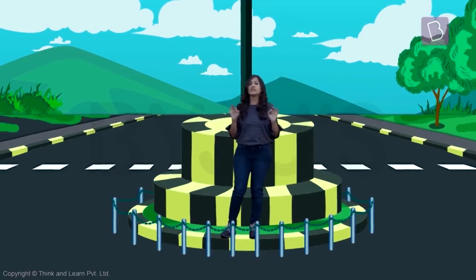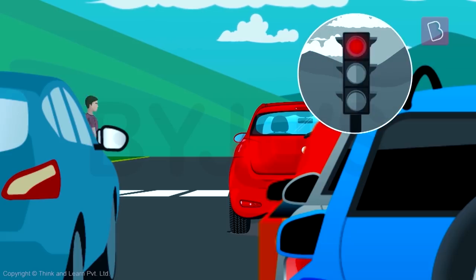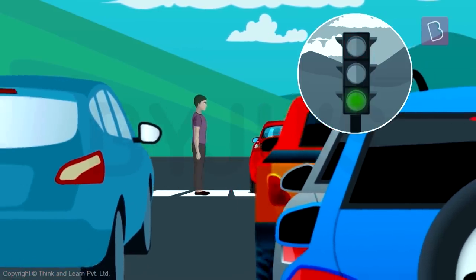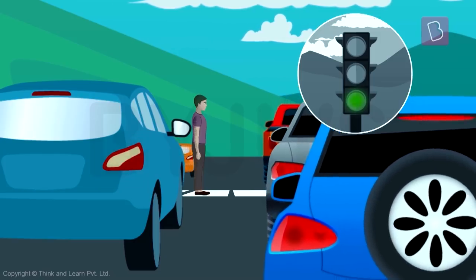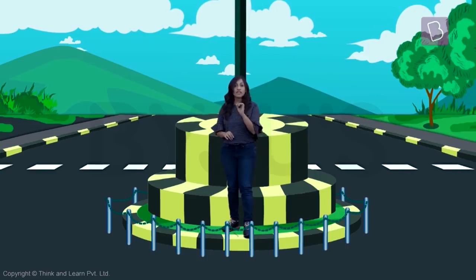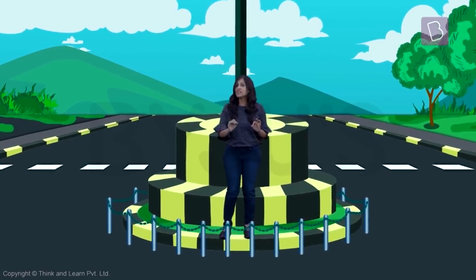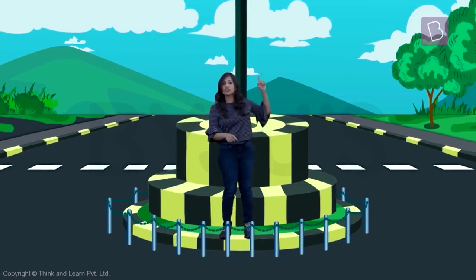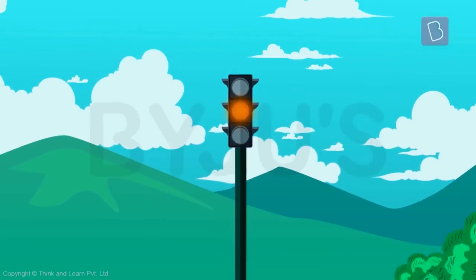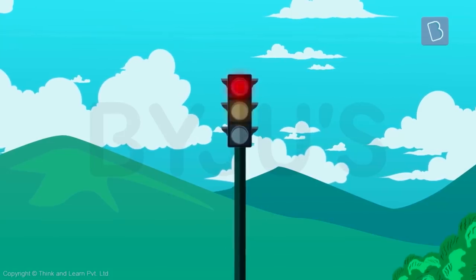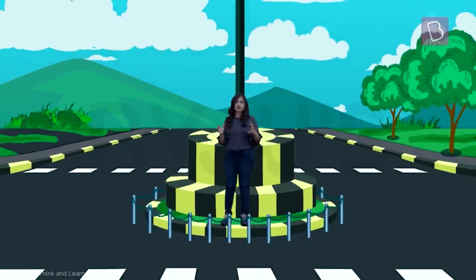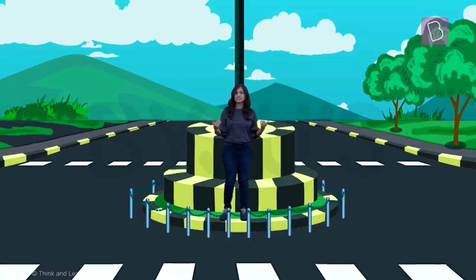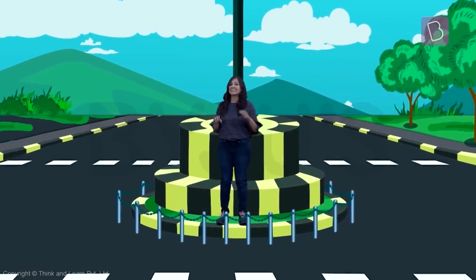You might ask: why do we need amber at all? Why can't it just go from red to green? Well, we all need a little notice. Imagine it went straight from red to green and you were still in the middle of the crossing — you wouldn't have time to get across. The amber light is that warning, telling everyone the signal is about to change, so they can either scurry across fast or get ready to go.